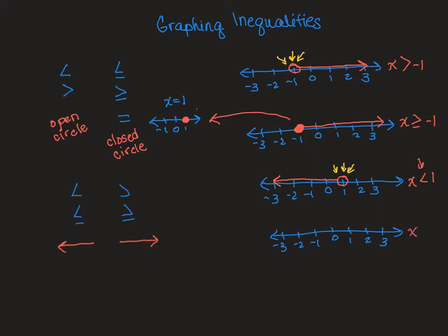The last one is x is less than or equal to 1. It can equal 1, so my circle is closed. My arrow is going to be in the direction the symbol is pointing. That is basically it — you just have to look at the direction of the symbol and figure out if it can be equal to. If it can, the circle is colored in, or closed. If it can't, it has a force field around it — it can't be that number exactly, but it can be anything less than that number.